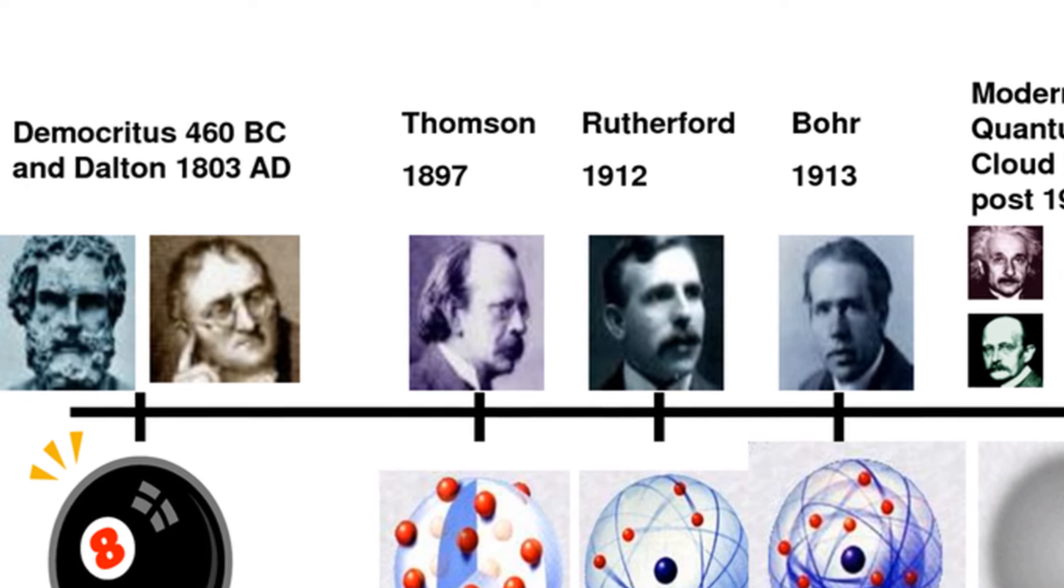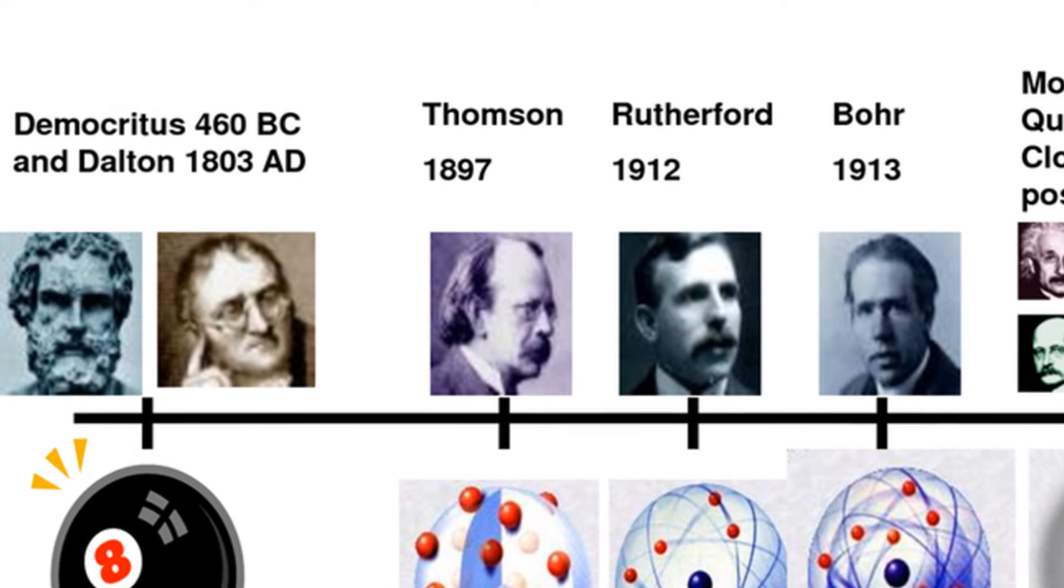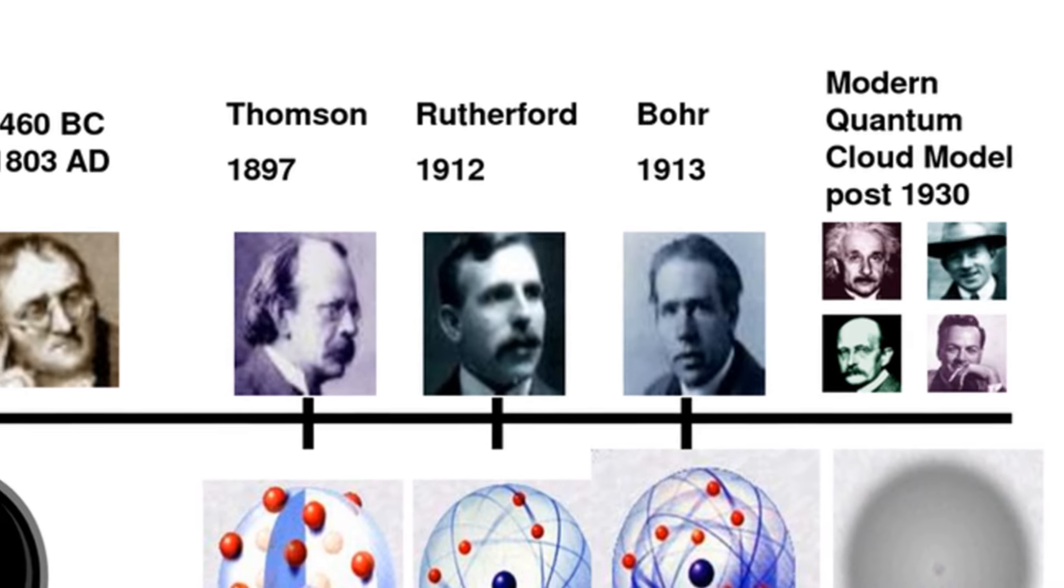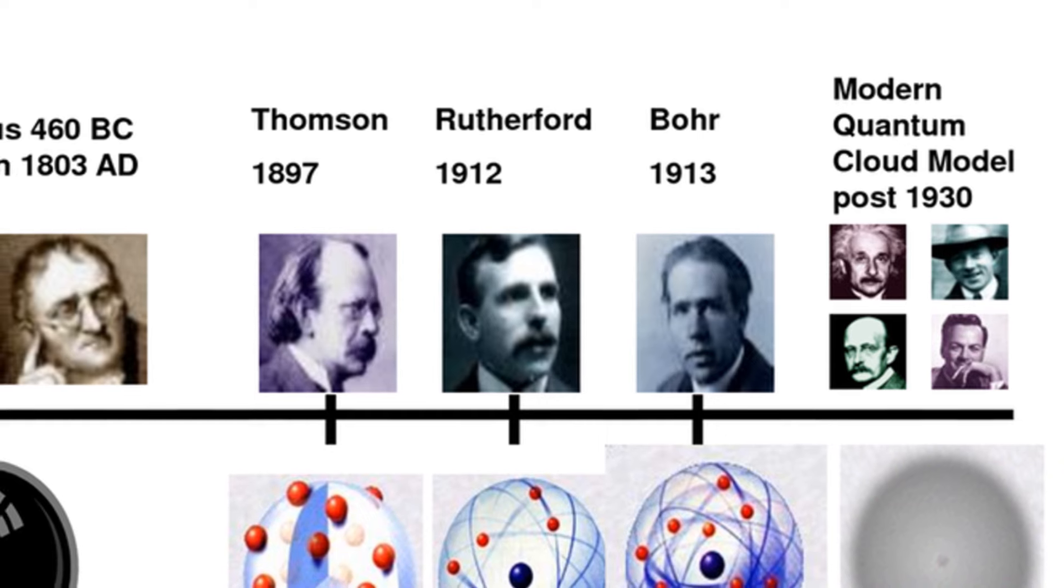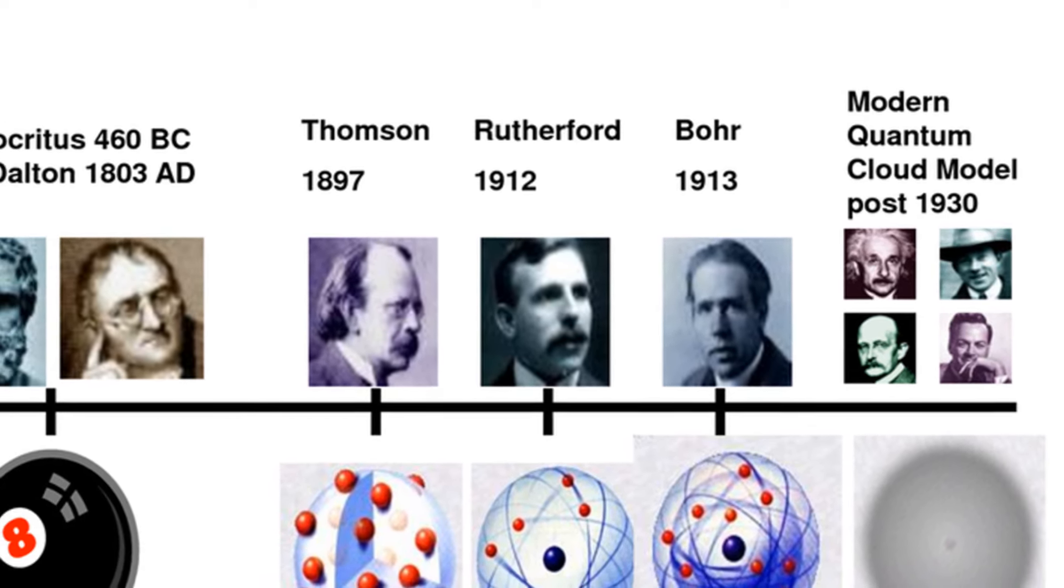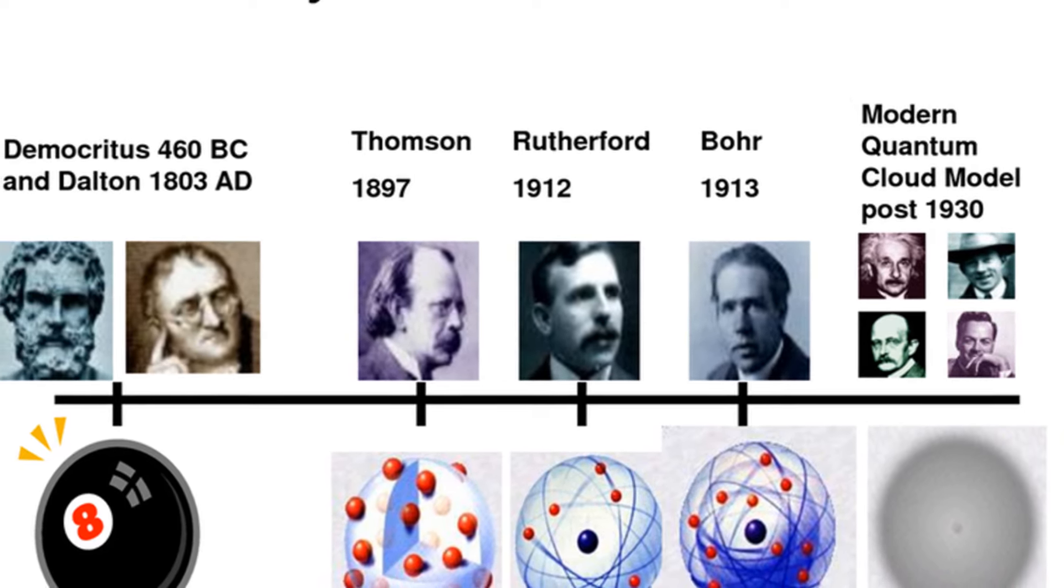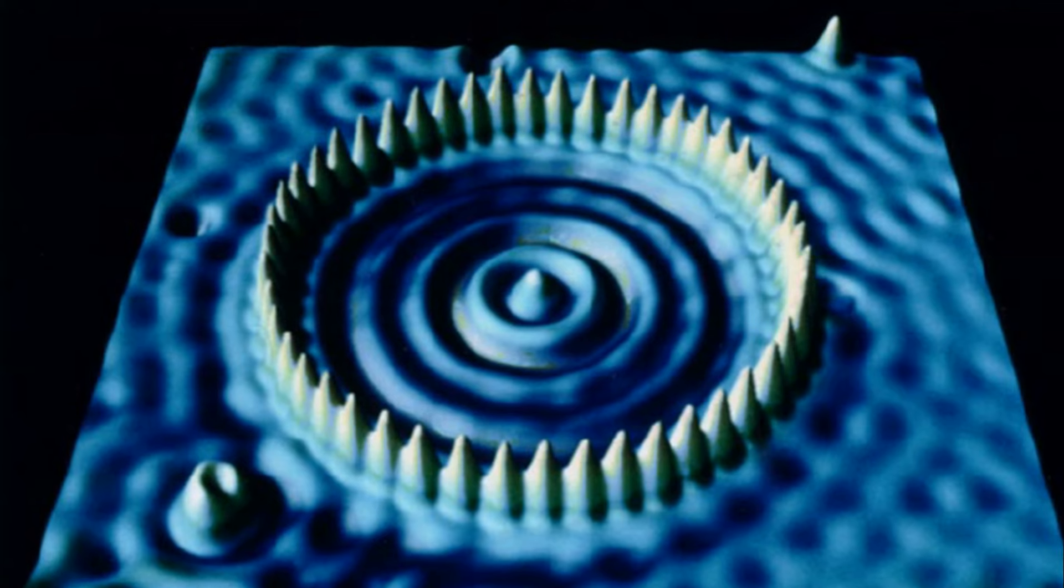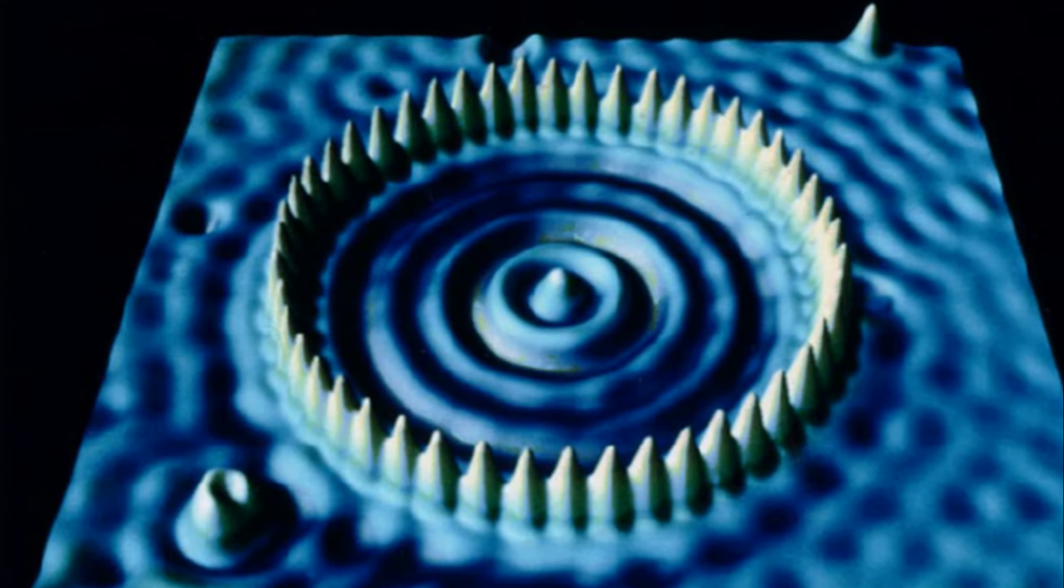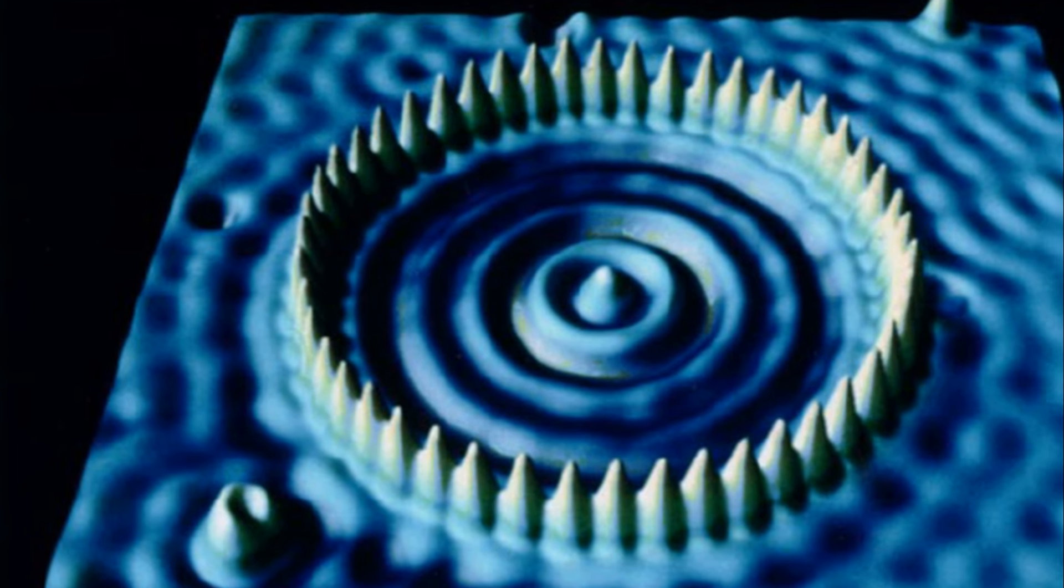The timeline on the history of atomic models, from the ancient Greek's billiard ball model of the atom, to the present-day quantum cloud model of the atom, reveals that there is simply nothing solid within the atom as was originally presupposed within materialism. This image of atoms made by Don Eigler of IBM also brings this point home.